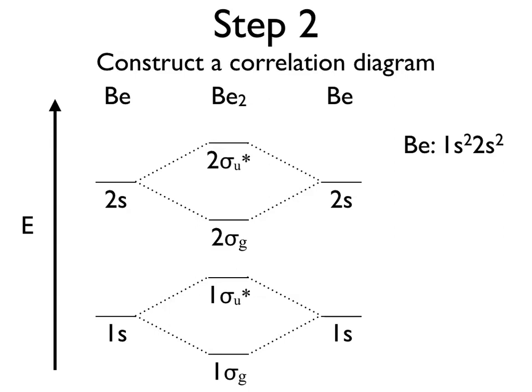The sigma subscripts u and g, and the position of a star, are all explained in the text. For our purposes, we care about the main number — 1 or 2 — which shows the relative energy level, and the star, which shows whether it's bonding (no star) or anti-bonding (star present).